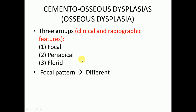There are three patterns of cemento-osseous dysplasia based on clinical and radiographic features: focal, periapical, and florid. The focal pattern is somewhat different in that it is most common in white people, whereas the periapical and florid types are more common in black people.